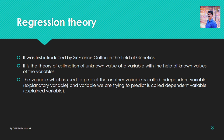The variable which is used to predict another variable is called the independent variable, also known as the explanatory variable. The variable which we are trying to predict is called the dependent variable, also called the explained variable. This is about regression theory.